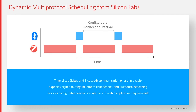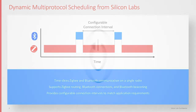For high-speed over-the-air firmware updates, the device will likely need to be configured to support much longer Bluetooth connection periods. These examples lie on opposite ends of the spectrum. However, with a configurable connection interval, Silicon Labs multi-protocol solution provides a flexible framework to meet the unique needs of different applications.